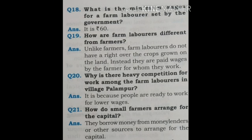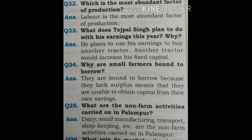Question 19: How are farm laborers different from farmers? Unlike farmers, farm laborers do not have a right over the crops grown on the land. Instead, they are paid wages by the farmer for whom they work. Question 20: Why is there heavy competition for work among the farm laborers in Palampur? It is because people are ready to work for lower wages. Question 21: How do small farmers arrange for the capital? They borrow money from money lenders or other sources to arrange for the capital. Question 22: Which is the most abundant factor of production? Labour is the most abundant factor of production.